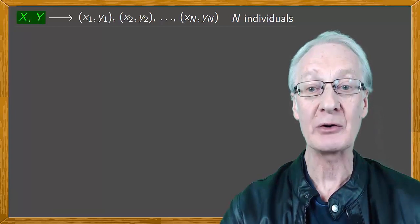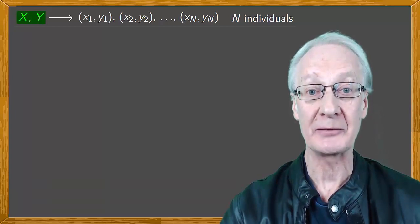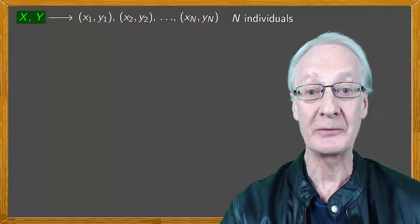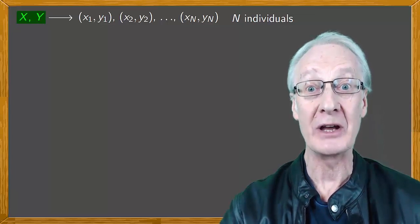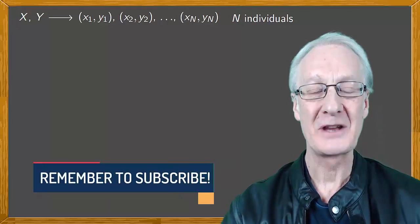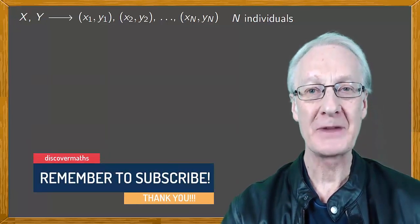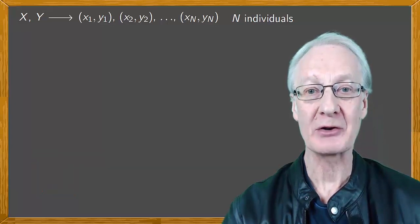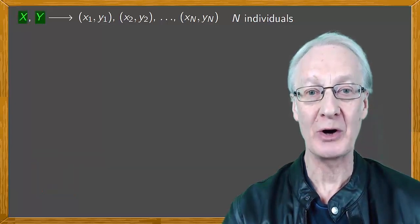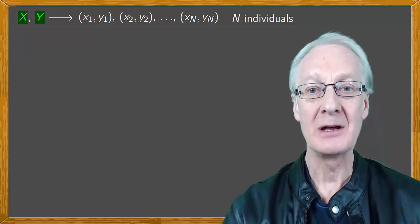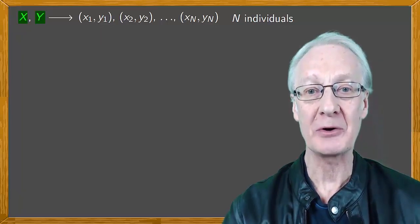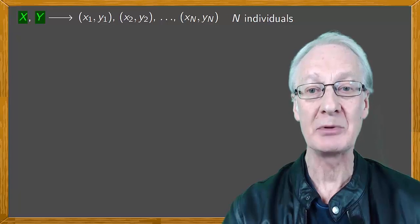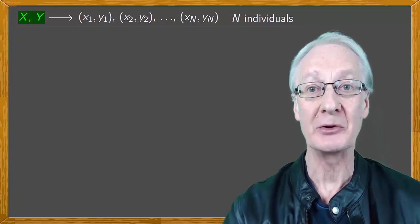We'll also see how to obtain regression lines, which allow us to estimate the value of one of the variables if we know the value of the other. We'll be working with tables. These tables will allow us not only to calculate the parameters corresponding to the variables x and y independently, but also to calculate the new parameters, the covariance and the correlation coefficient, that'll enable us to see how the two variables are related.